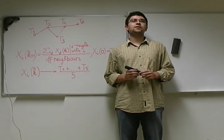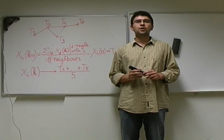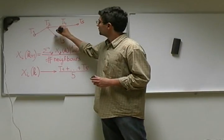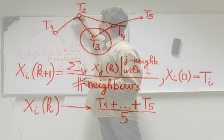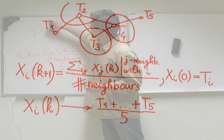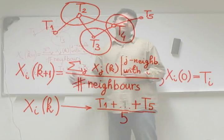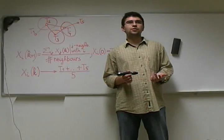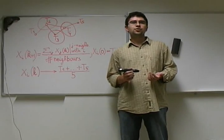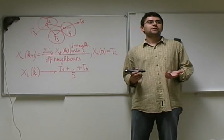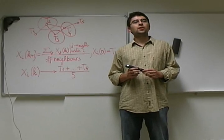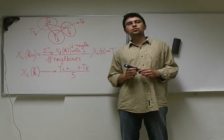A very interesting thing is that this calculation can be obtained in the following way. Each sensor in every iteration calculates the average of the previous iterations of its neighbors, and each agent is considered a neighbor of itself. For example, agent 3 will calculate the average from the values of sensor 3, sensor 4, and sensor 2. After that, sensor 3 sends its result to its neighbors.